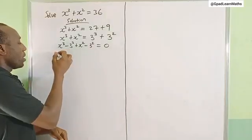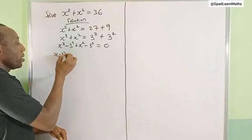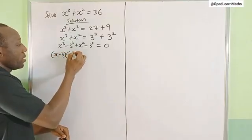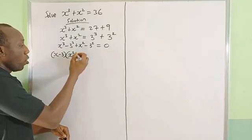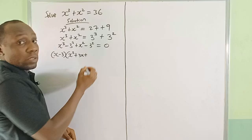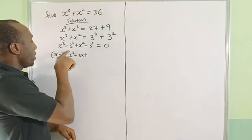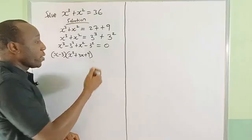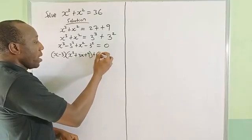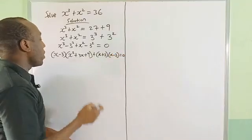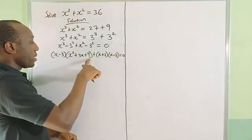Now that will give us (x - 3)(x² + 3x + 9). Here I'm going to use difference of two squares as (x + 3)(x - 3) = 0. Now compare this first term and the second term.